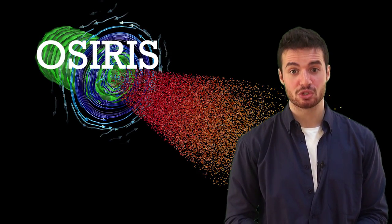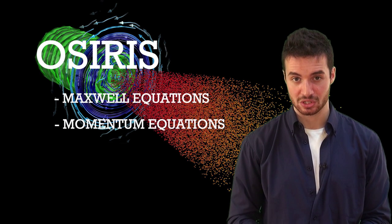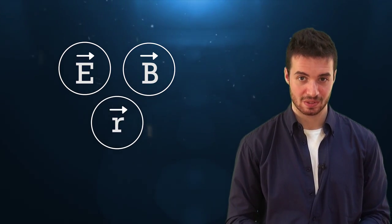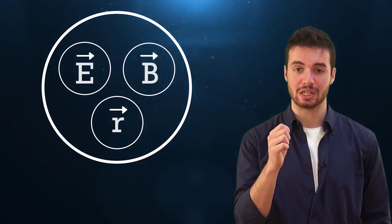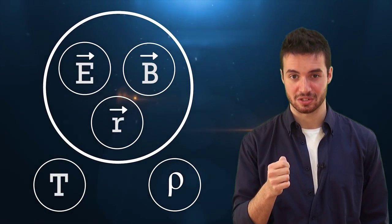The interface I shall use is called OSIRIS, which uses an iterative algorithm sustained by Maxwell and momentum equations to calculate the new electric and magnetic fields, as well as the new particle positions. This is how we will actually evaluate the evolution of temperature and density of the system in consideration.